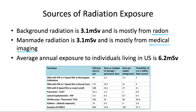Our average annual exposure is 3.1 plus 3.1, totaling 6.2 millisieverts for individuals living in the U.S. Dental x-rays, by comparison, are in the range of microsieverts — not even close to what we receive from background and man-made radiation every year. Even a CBCT falls in the microsievert range, so the relative exposure is far less than what we're exposed to on a daily basis.